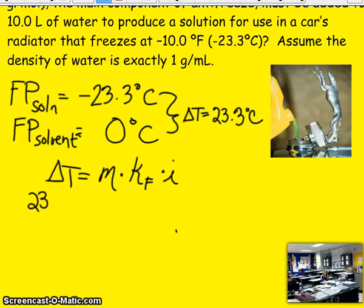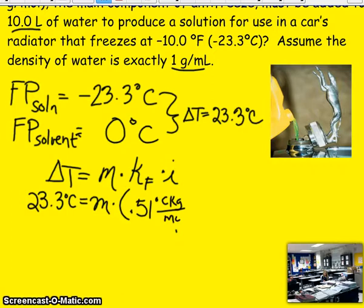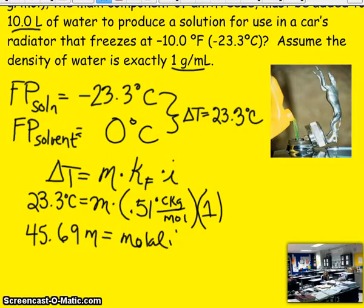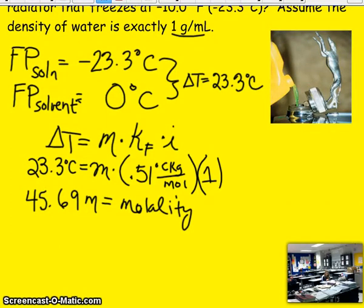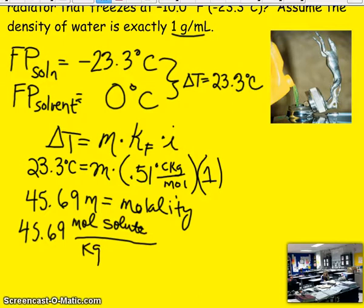So our delta T is 23.3 degrees Celsius. Our molality is our X. We don't know our moles of solute or our kilograms of solvent, though we have enough information to find that. Our freezing point depression constant for water is 0.51 degrees Celsius kilograms per mole. And our I is one. So we can solve for our molality if we just simply divide those. 23.3 divided by 0.51. And that's going to give us 45.69 molal.